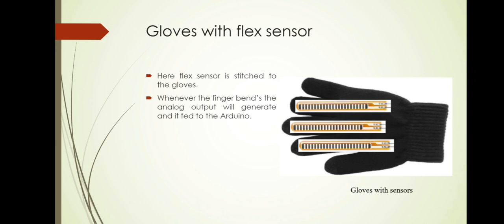Gloves with flex sensor: here, the glove is shown with flex sensors. Whenever the finger bends, the sensor also bends because it is stitched to the glove. And the output of the sensor is in analog form which is fed to the Arduino.